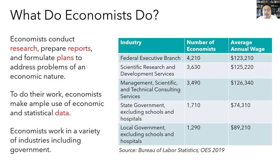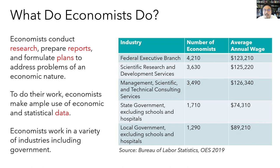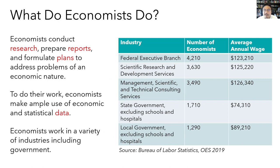Economists work in a variety of industries including government. This table shows the top five industries employing economists in the US in 2019 along with their average annual salaries. The largest employer of economists in the US is the federal government, followed by two industries that primarily do research and consulting work, then state and local governments. The average annual wage for all economists in the US in 2019 was about $116,000, which is well above the national average for all occupations.